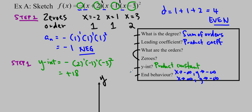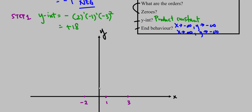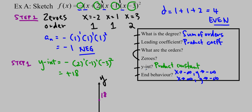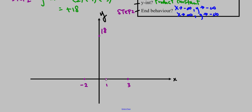Now I'm going to think about end behavior and use the orders to figure out the shape. This is step 2. The end behaviors tell us we're going to start down here. Then the order tells us how we go through the zeros: if the order is 1, it goes through the zero like a line; if the order is 2, it looks like a quadratic; if the order is 3, it looks like x cubed — the cubic parent function — and so forth.